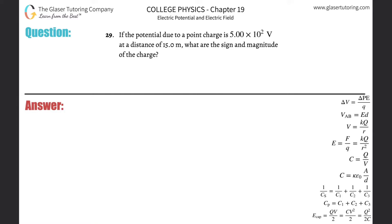Number 29: if the potential due to a point charge is 5×10² volts at a distance of 15 meters, what are the sign and magnitude of the charge? So here we have a charge and they want to find the sign and magnitude. We know that at a certain distance from that charge, the voltage is 5×10² volts, and the distance is 15 meters.